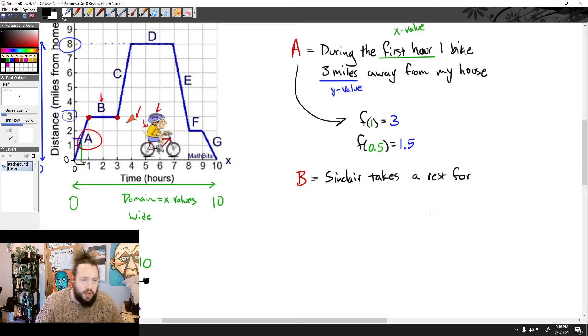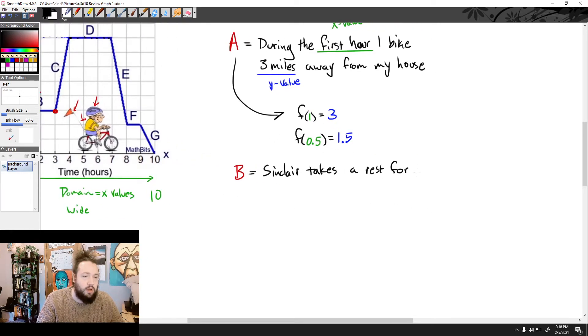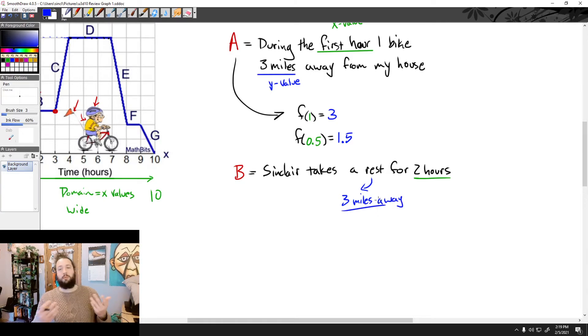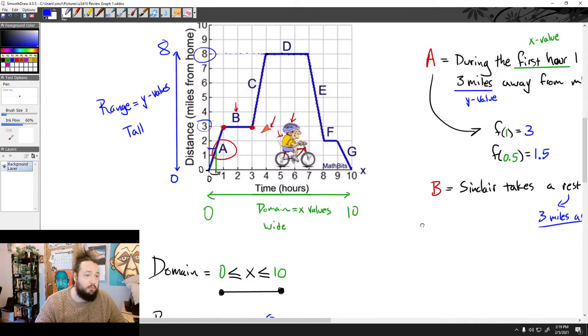I've stopped riding my bike and I'm taking a rest. So here we can say Sinclair takes a rest for, let's see, how long did I take a rest for? One hour, two hours. I take a rest for two hours. Now, if we wanted to label this, this again would be my domain or X value. And where am I actually resting? I'm resting at a location that is 3 miles away. Okay? So I'm just sitting there 3 miles away. Maybe I'm delivering food. Maybe I'm having breakfast. Who knows? But Mr. Sinclair is just chilling for two hours during section B.